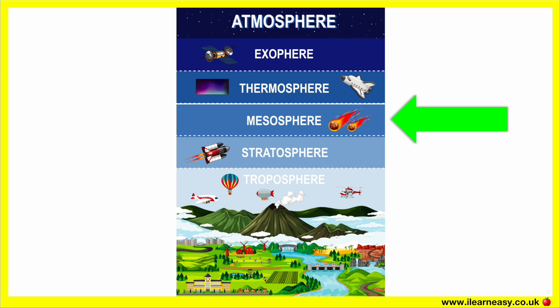The mesosphere is located about 50 miles above the Earth's surface. This layer gets progressively colder with altitude, so the higher up we go, the colder it becomes. The top of the mesosphere has an average temperature of about minus 85 degrees Celsius, making it the coldest place found within the Earth's system. Most meteors will burn up upon entry into the mesosphere.